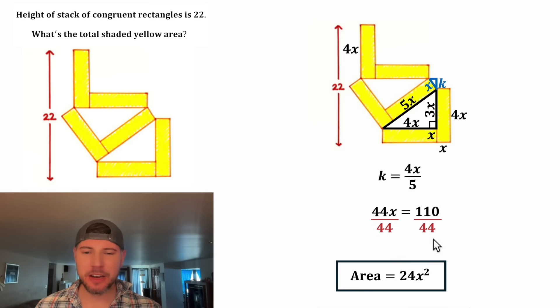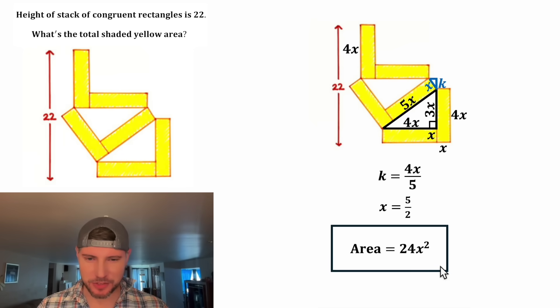And now we've almost solved for X. Let's divide both sides by 44. And that leaves us with X is equal to 55 over 22, which is equal to 5 over 2. And now we have our value for X. Let's give ourselves some room and let's plug 5 halves in for X.